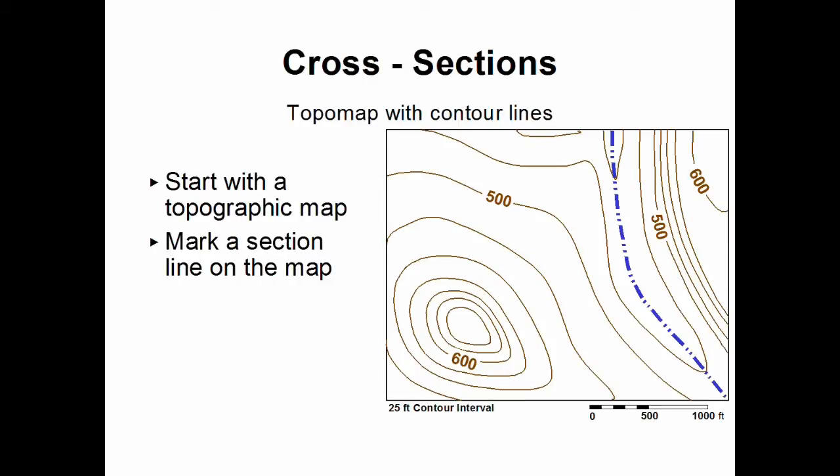Now what we need to identify on the topographic map is a place where we want to slice the surface and look below. That's called a section line. Well they're usually labeled with something X to X prime instead of just A, B or C, D. This way multiple section lines can be put on one map.